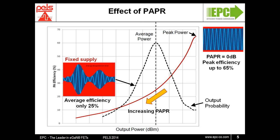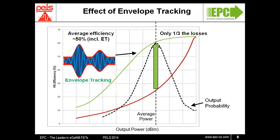So why envelope tracking? If you can replace the fixed supply with a variable supply that follows the RF modulated envelope, it is possible to push the efficiency of the RF amplifier back to close to that of the peak efficiency. In doing so, you can reduce the overall losses of the RF amplifier down to about a third of what they would have been, and also increase the overall efficiency by at least 25 percentage points. However, to achieve this for LTE as an example, you need a power supply with a bandwidth of between 60 and 100 megahertz.